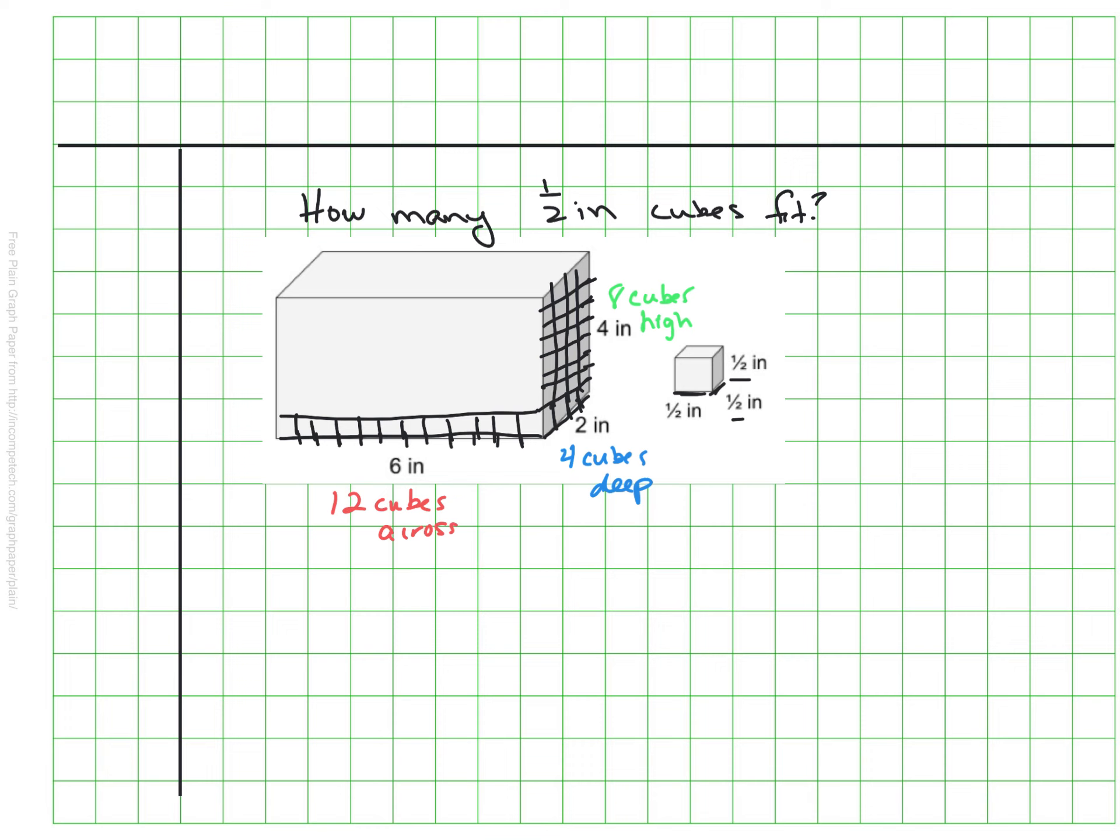So again, I know along the bottom there's 12 across and 4 deep. So I know that there's going to be 48 just on that bottom layer alone. And I know that if there's 48 on the bottom layer, and there are 8 layers of those, then this box is going to hold 384 cubes, all told. So 384 cubes will fit in here. That's a lot more than maybe we expected.